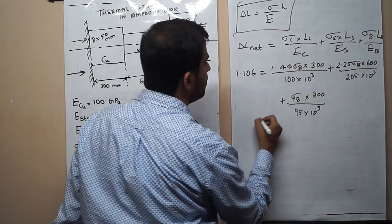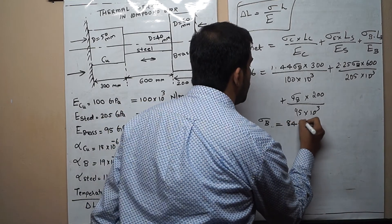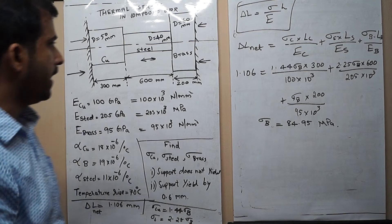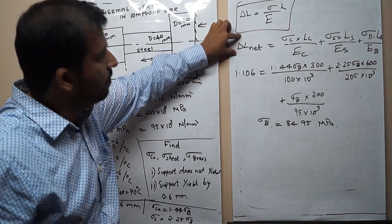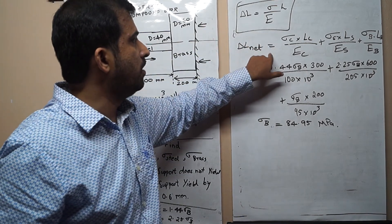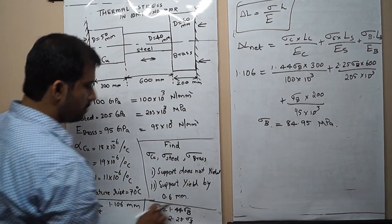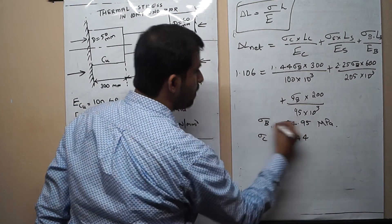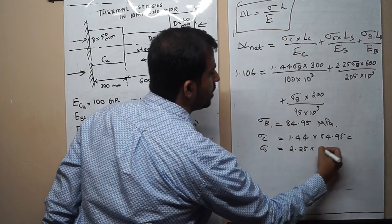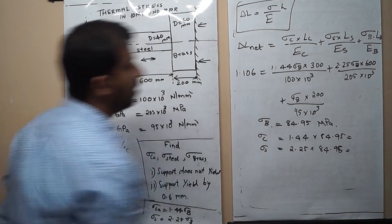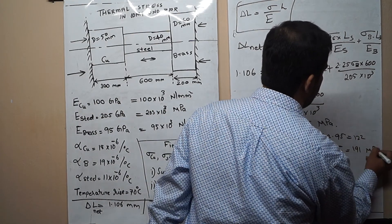Solving this equation for σ_B gives σ_B = 84.95 MPa. This is the key equation: the δL under compressive stress must equal the δL under thermal expansion. Therefore: σ_copper = 1.44 × 84.95 = 122 MPa, σ_steel = 2.25 × 84.95 = 191 MPa, and σ_brass = 84.95 MPa. These are compressive stresses.